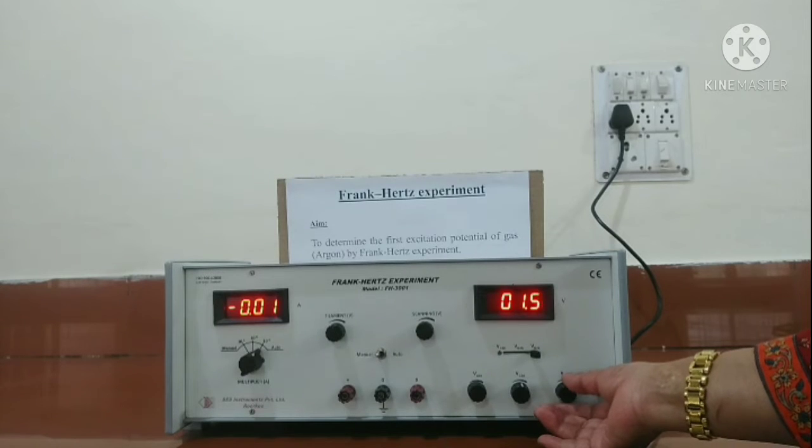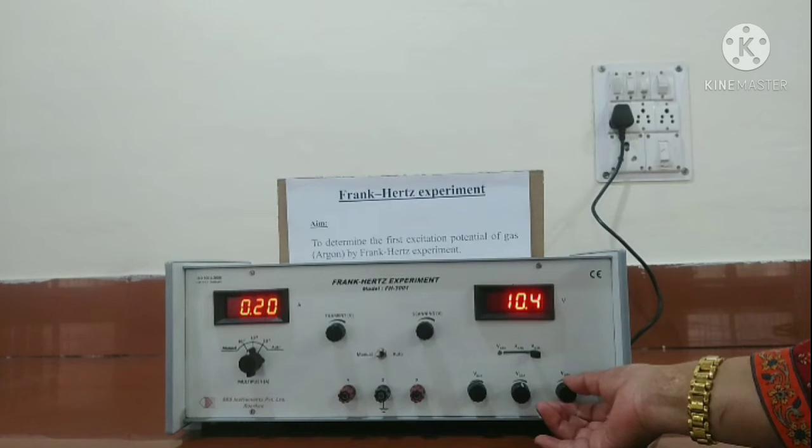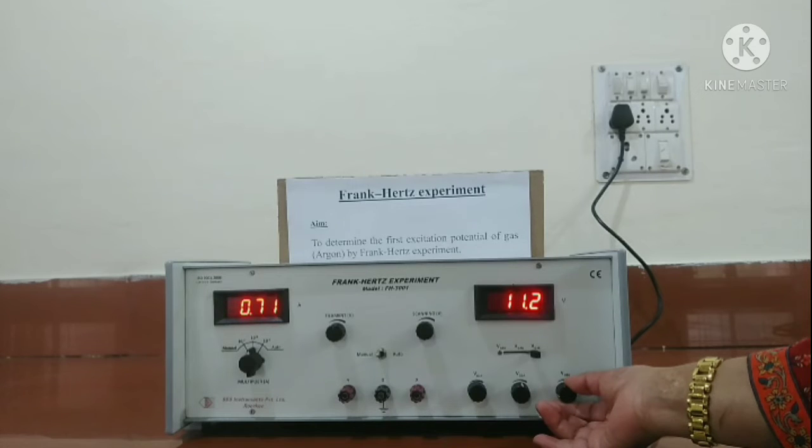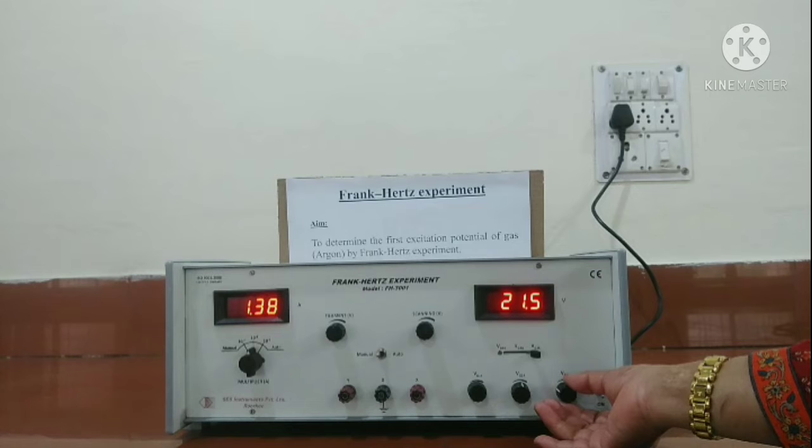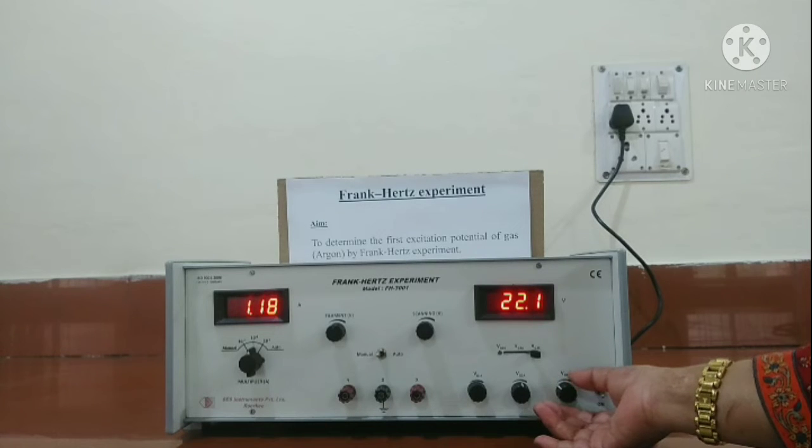Then increase the voltage. We will see that as we go on increasing the voltage, first it increases with increasing accelerating voltage, and then at some stage it decreases. For example, here we can see that it is decreasing and then it starts again increasing. In this way we will keep on changing the VG2K values and noting down the current.